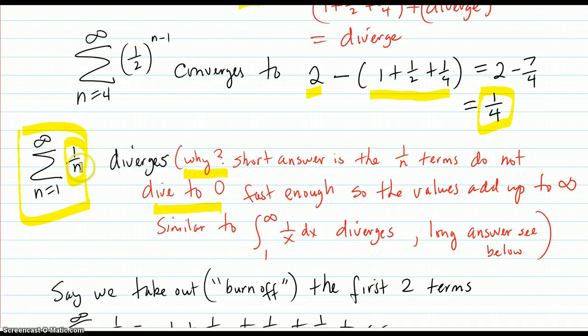Another property we're going to learn later is that for this even to have a chance to converge, the an terms have to go to zero. If they don't go to zero, it's going to either go back and forth or add up to infinity. But 1/n does go to zero. So what's the problem? It doesn't go fast enough. It creeps down to zero very slowly, similar to the way this integral diverged.